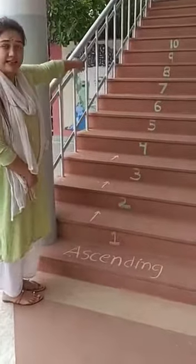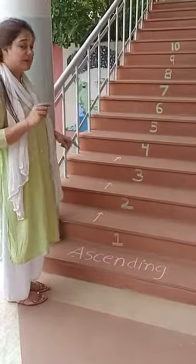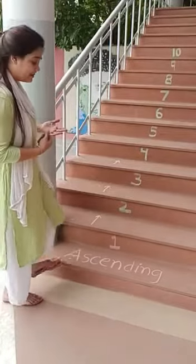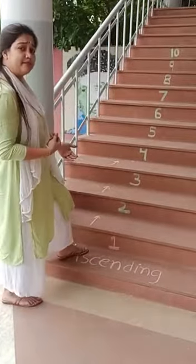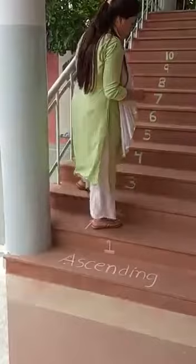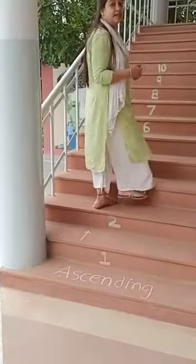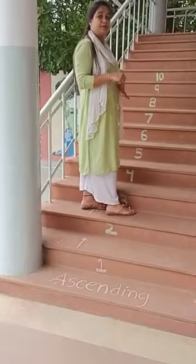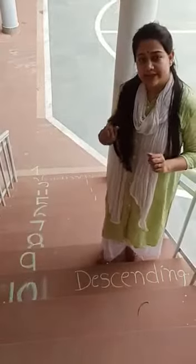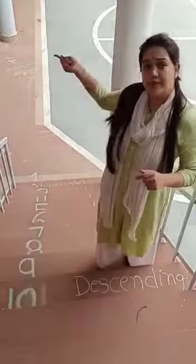Can you see the numbers written on the stairs? The number is starting with 1, and here I have written ascending. Ascending means from small number — I am going from 1 to 2, 2 to 3, 3 to 4. This is the ascending order. Going from the smaller number and coming upside. This is called ascending order — from smaller number to the bigger number.